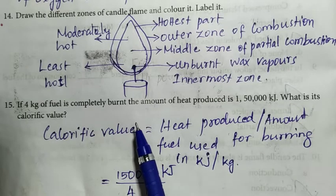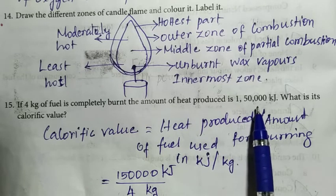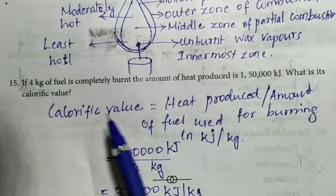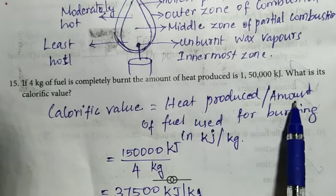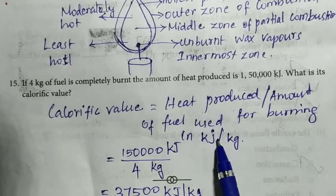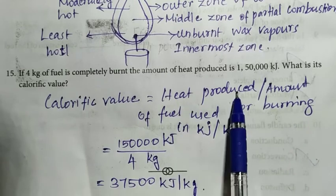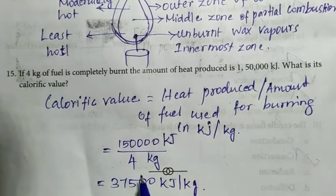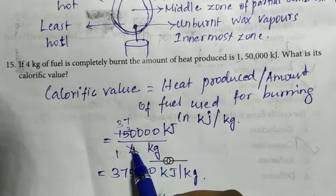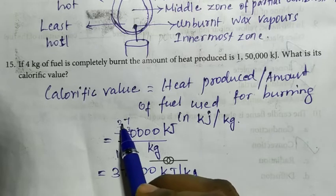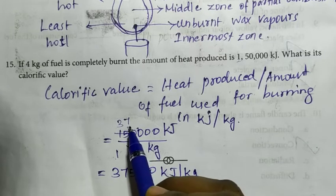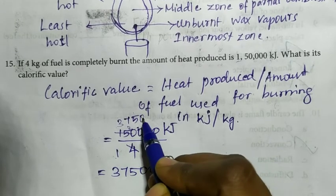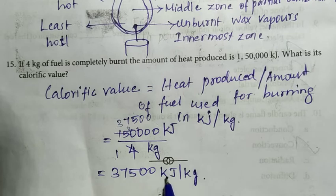Fifteenth question — If 4 kg of fuel is completely burnt and the amount of heat produced is 150,000 kilojoules, what is its calorific value? Calorific value equals heat produced divided by amount of fuel used, in kilojoules per kilogram. So, 150,000 ÷ 4 = 37,500 kilojoules per kilogram.